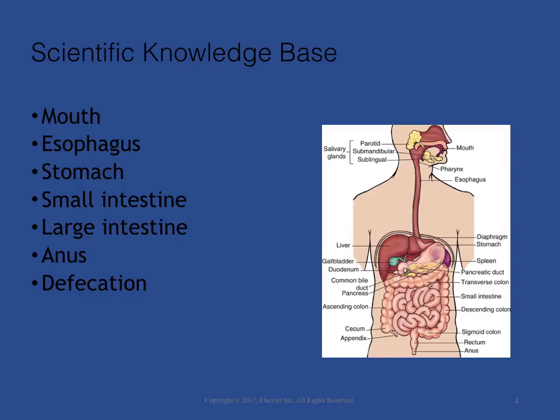The GI tract is a series of hollow mucous membrane-lined muscular organs. These organs absorb fluid and nutrients, prepare food for absorption and use by body cells, and provide for temporary storage of feces. The GI tract absorbs high volumes of fluids, making fluid and electrolyte balance a key function of the GI system. In addition to ingested fluids and foods, the GI tract also receives secretions from the gallbladder and pancreas. The large intestine is the primary organ of bowel elimination.